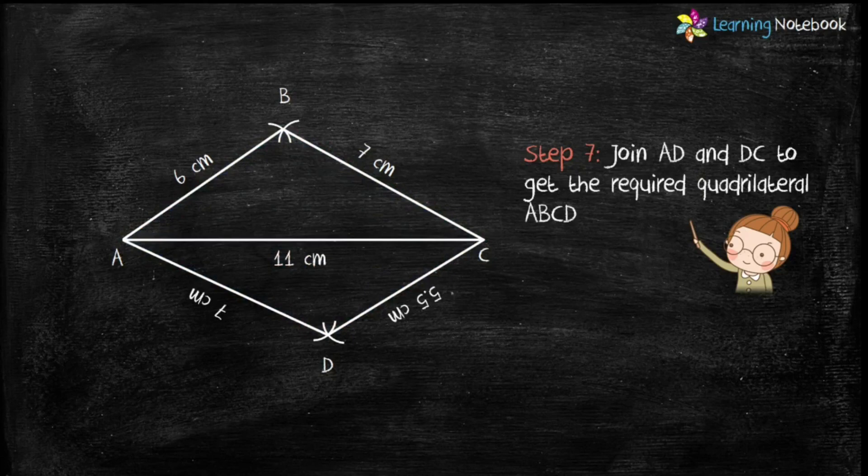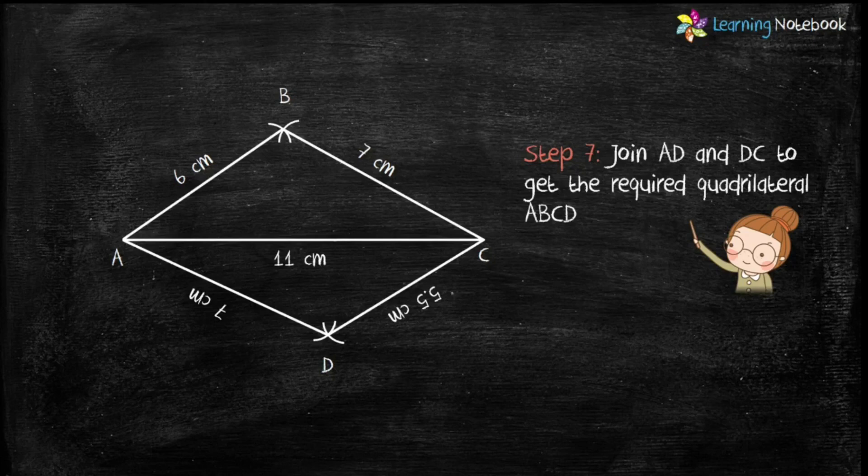So, this is how we construct a quadrilateral when length of its 4 sides and 1 diagonal are given to us.